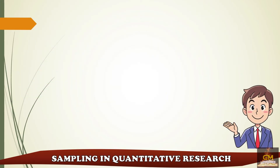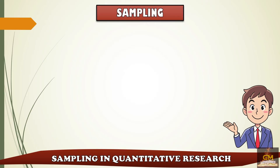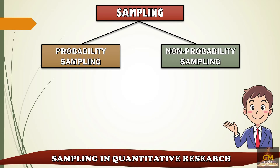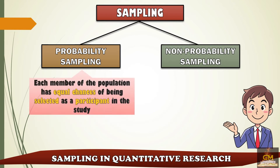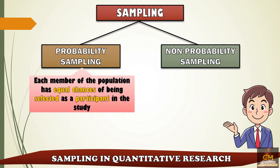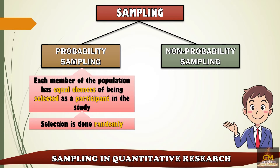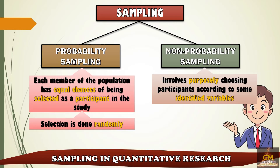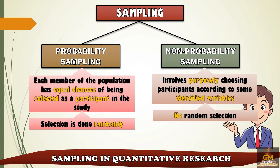Now we're going to talk about the different sampling techniques. Remember that there are two ways to get a sample: probability sampling and non-probability sampling. In probability sampling, each member of the population has equal chances of being selected — the selection is done randomly. In non-probability sampling, participants are purposely chosen according to some identified variables, and no random selection is done.